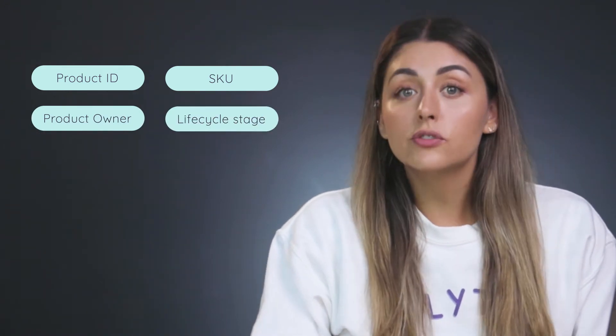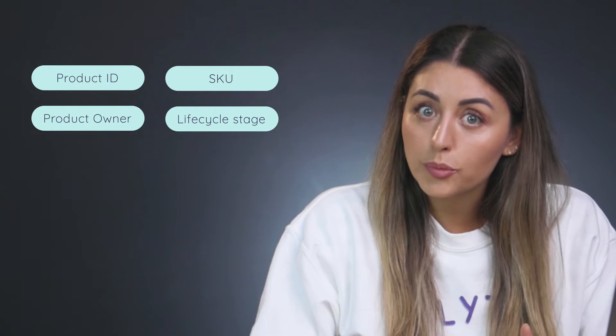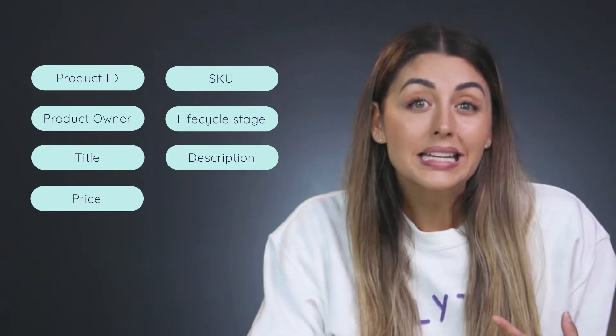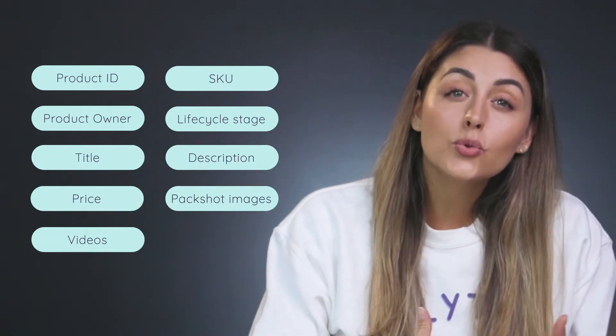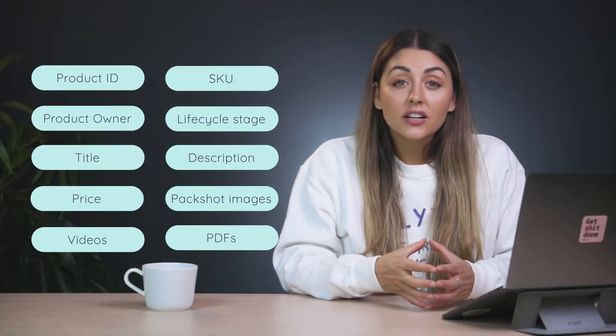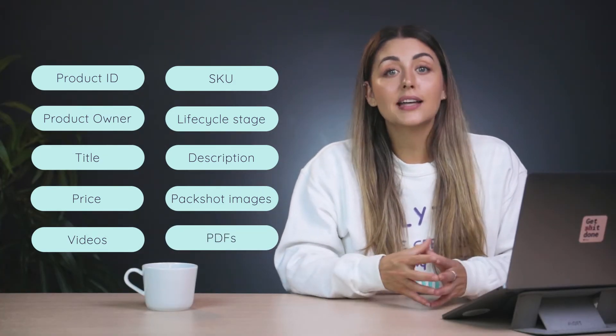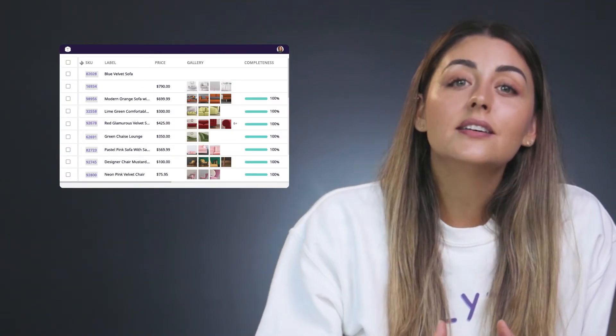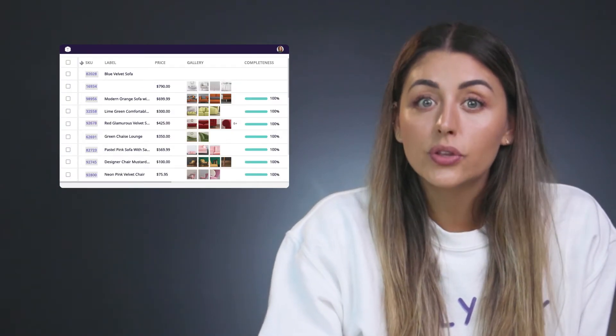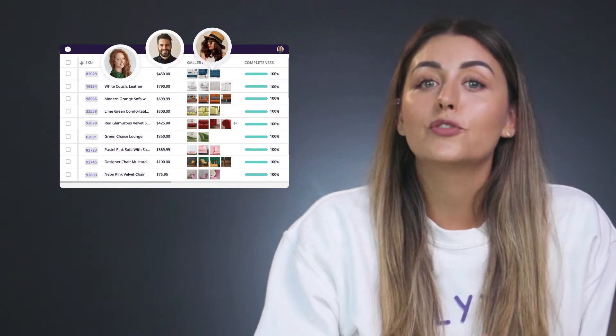Product attributes are all the data points or pieces of information tied to a product. This is everything from the internal technical data, like product ID, SKU, product owner, and lifecycle stage, to the information needed to market and sell your products, like title, description, price, packshot images, videos, PDFs, and so on. This is a lot of information that historically has been stored in different spreadsheets and systems, but with a product information management system like Plytix, you can bring all of this data into a single source of truth, where you and your team can work on it to get your products ready for market.